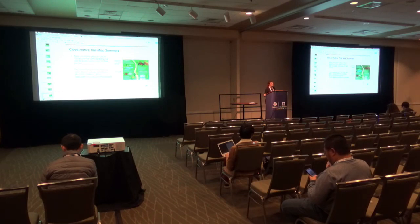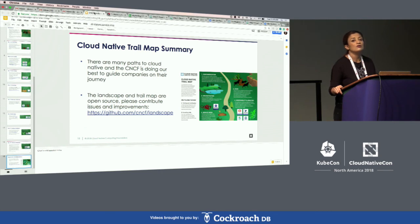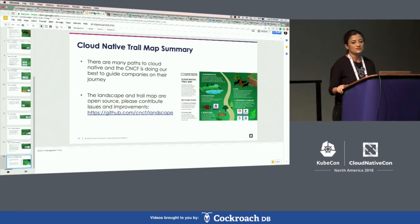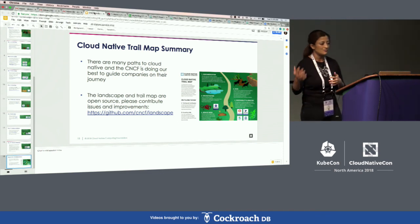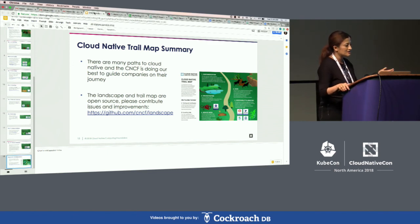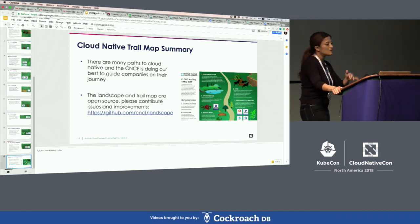Dev Stats was developed in-house with community input and GitHub as the main data source. We looked at all the repos, stars, and commits, then built a way to automatically pull reports and data from GitHub.